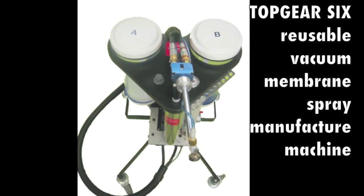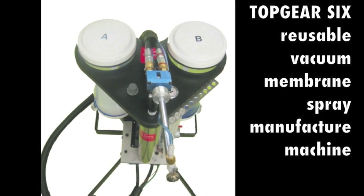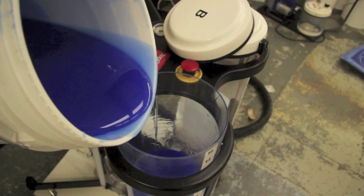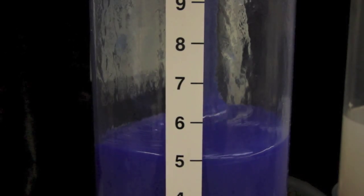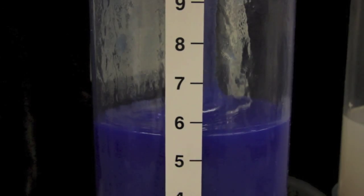Top Gear 6 is our flagship spray machine and features unique engineering design. Once the calibrated tanks are filled, the operator knows precisely the consumption during membrane spray manufacture.